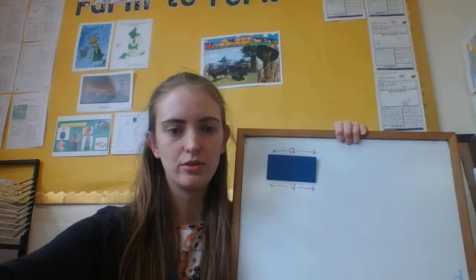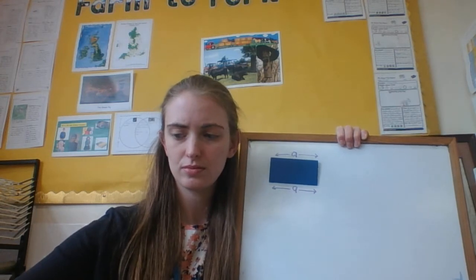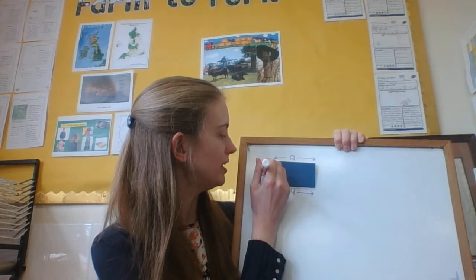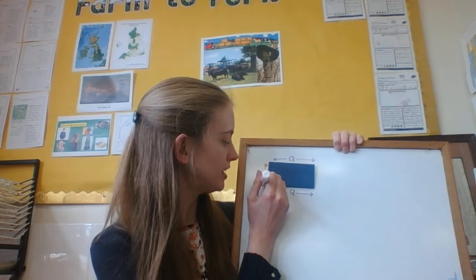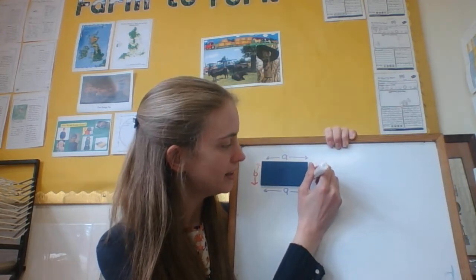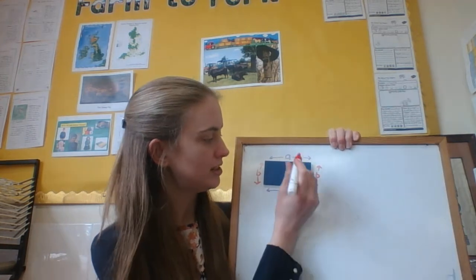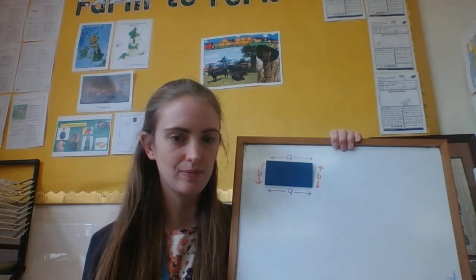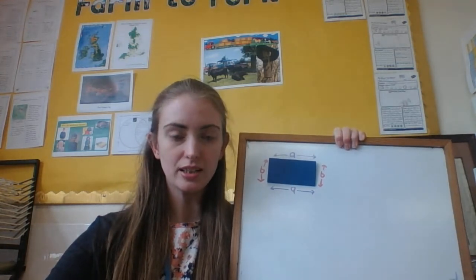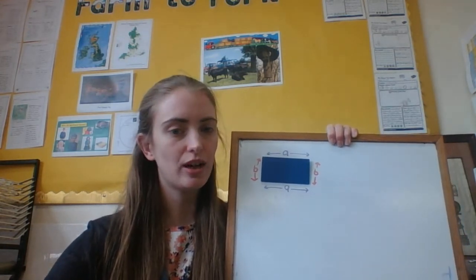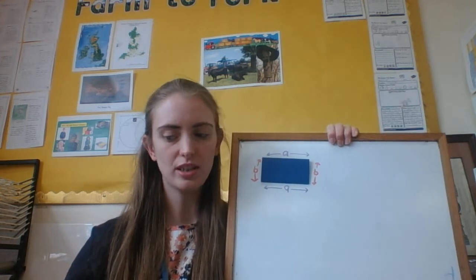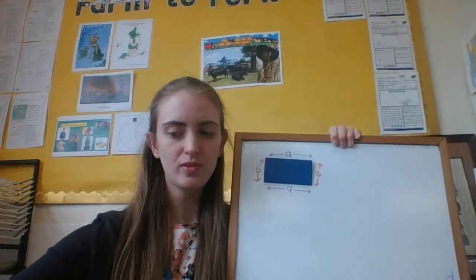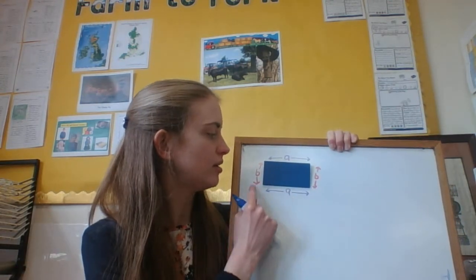I also know that this here, which I'm going to call B, this side is the same length as this side. So these two sides are the same. And these two sides are the same. And that means that I don't need to know every length of a rectangle when I'm trying to find its perimeter. All I need to know is one of the A's and one of the B's.